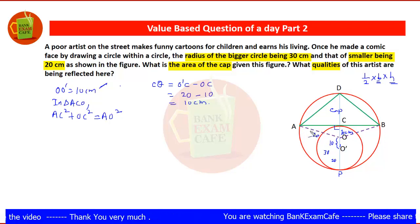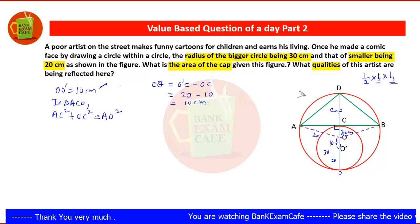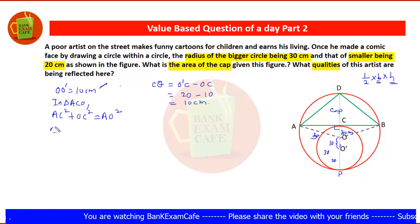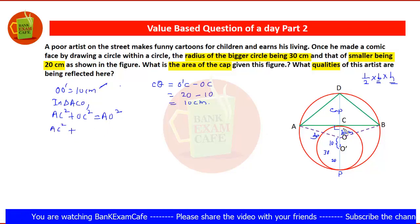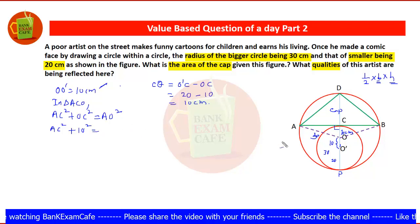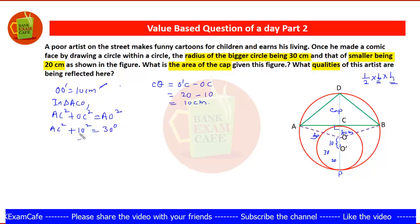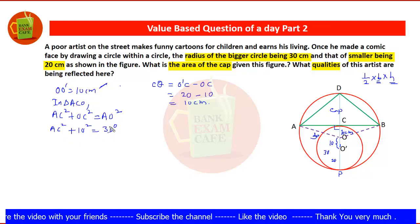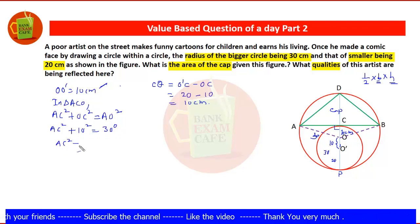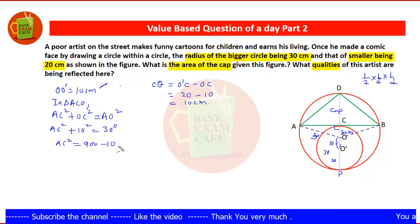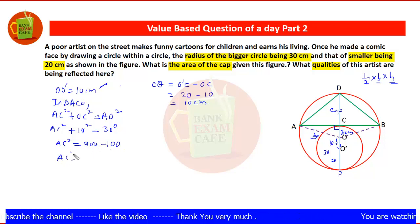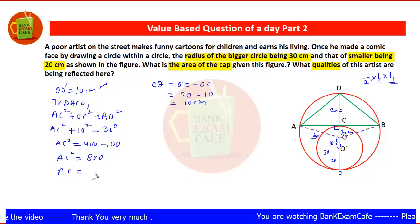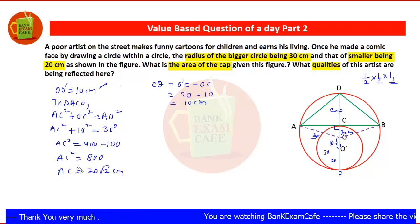Now in triangle ACO, by Pythagoras theorem: AC² + OC² = AO². OC is 10 centimeters and AO is 30 centimeters (the radius of the bigger circle). So AC² = 30² − 10² = 900 − 100 = 800. Therefore AC equals 20√2 centimeters.